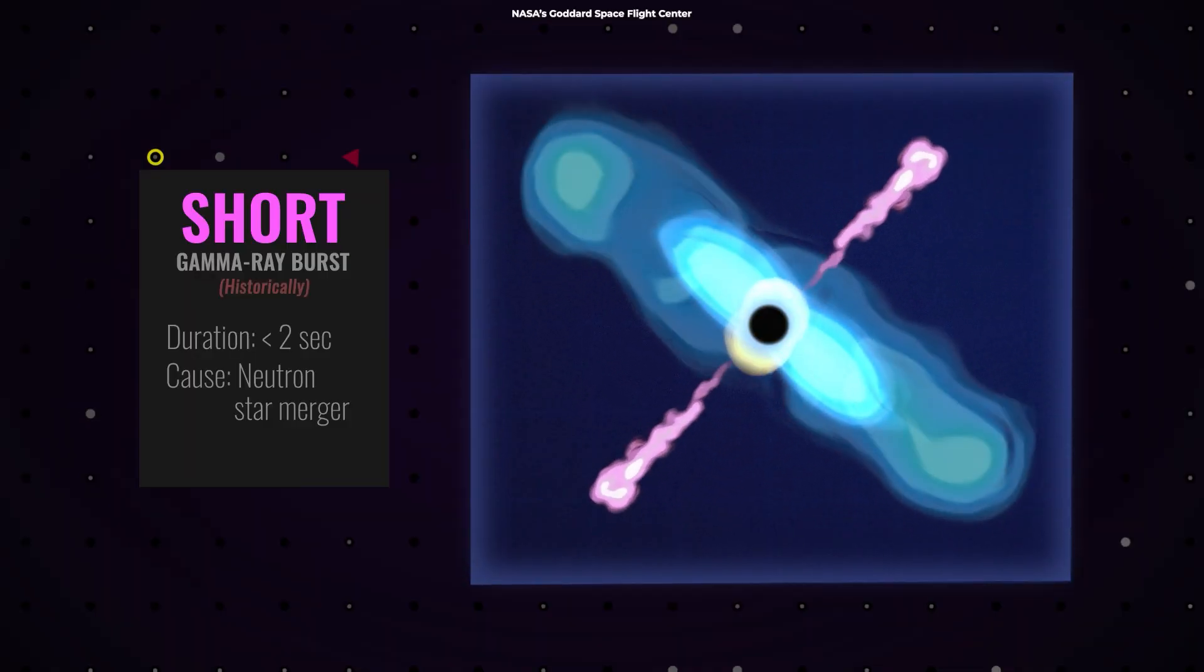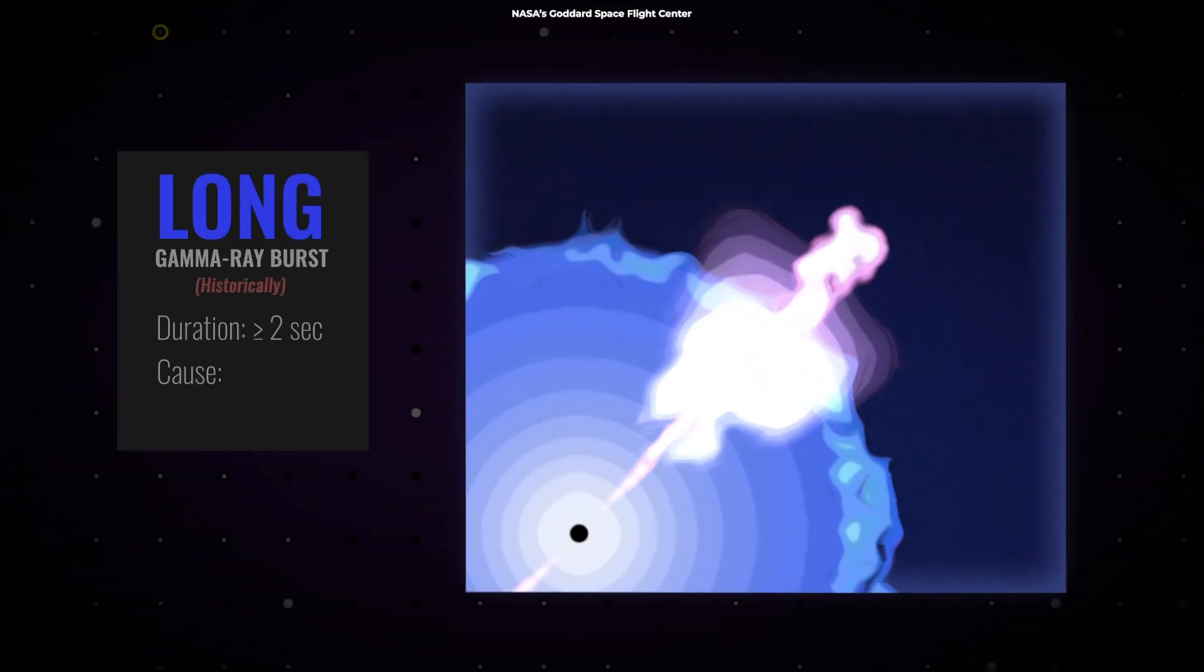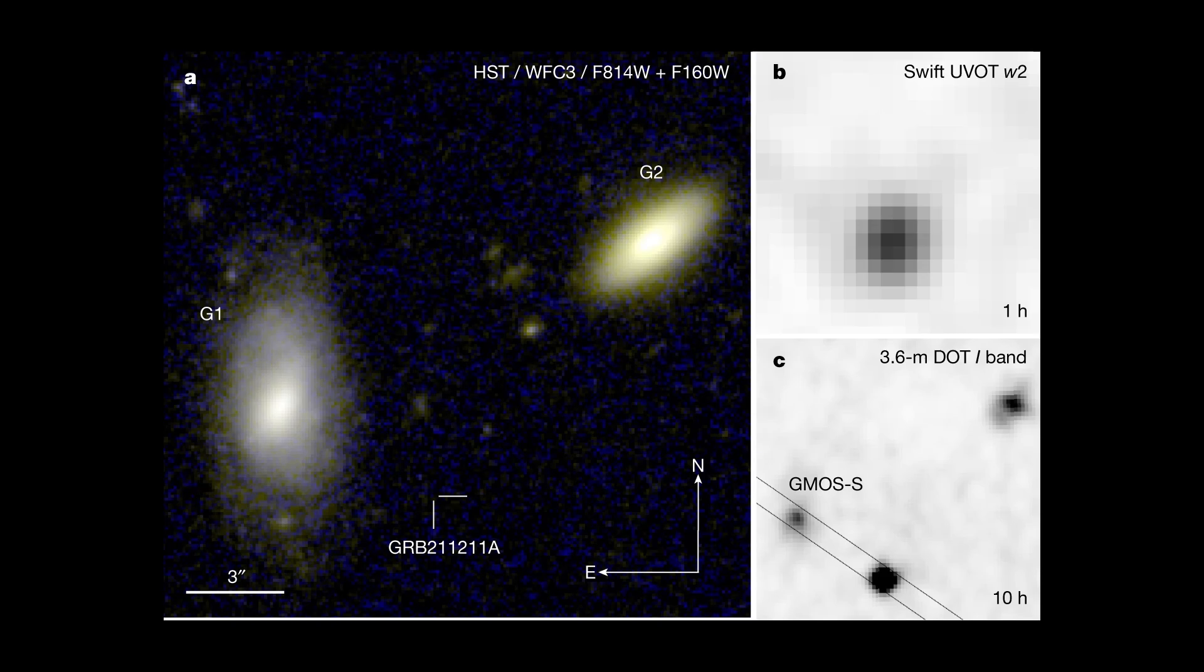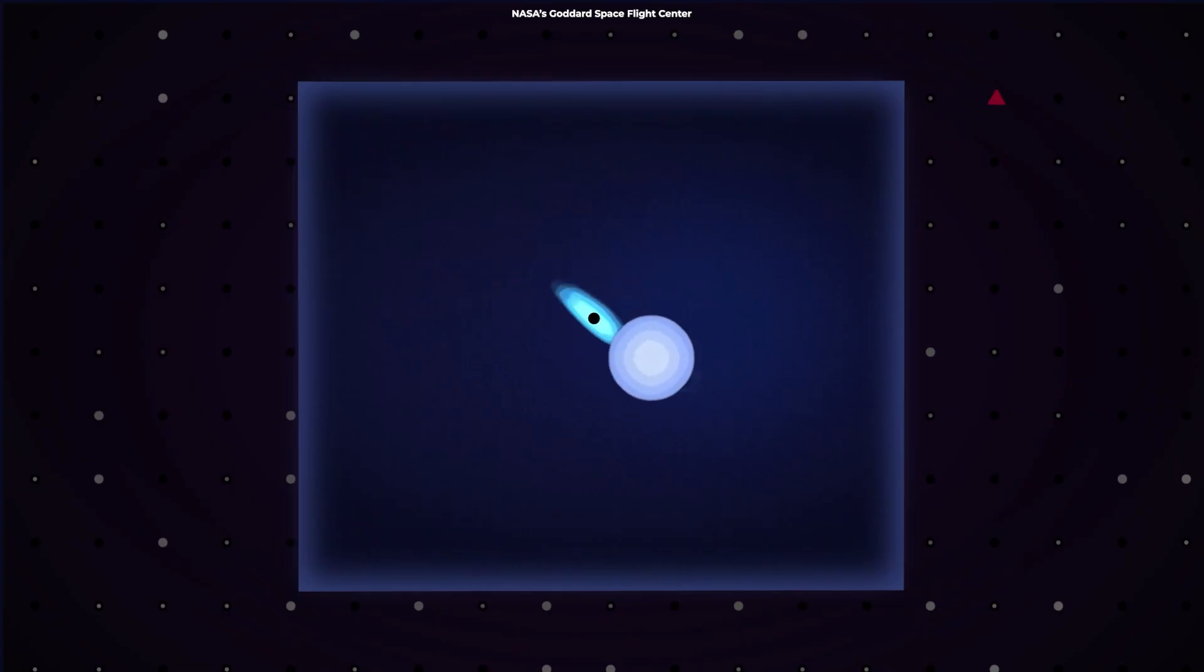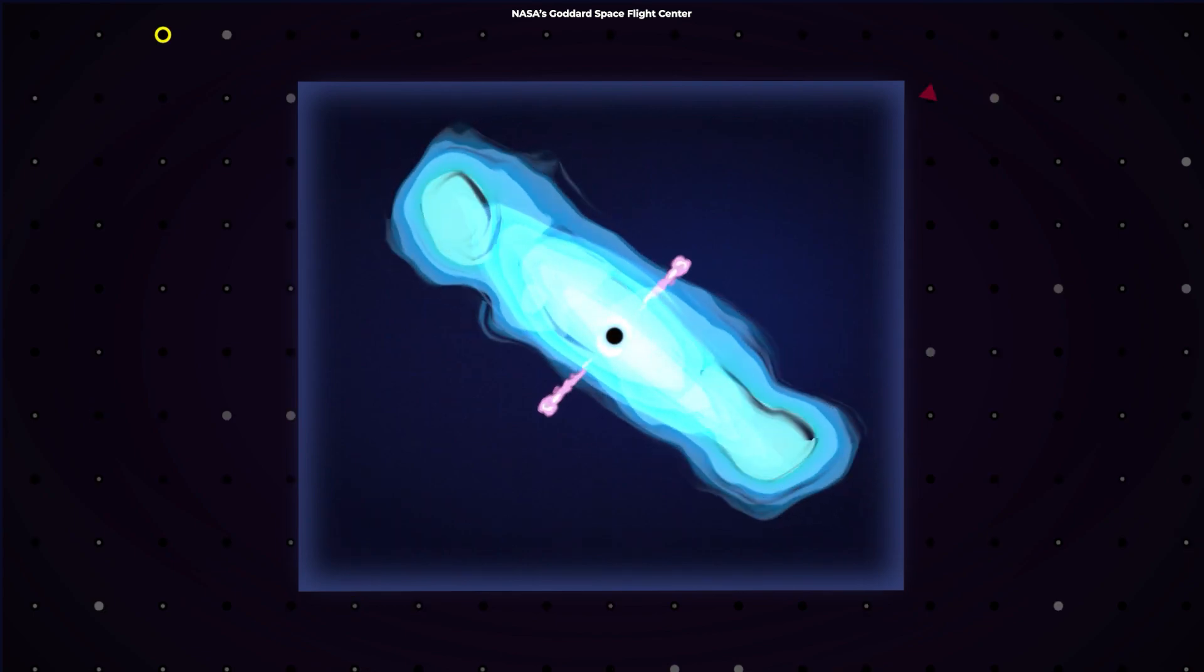For over 20 years, astronomers thought that kilonovae accompanied short gamma ray bursts and supernovae accompanied long ones. So, when Eleonora's team started looking at the wealth of data and images collected on the minute-long burst in December 2021, they expected to see a supernova. Much to their surprise, they found a kilonova.